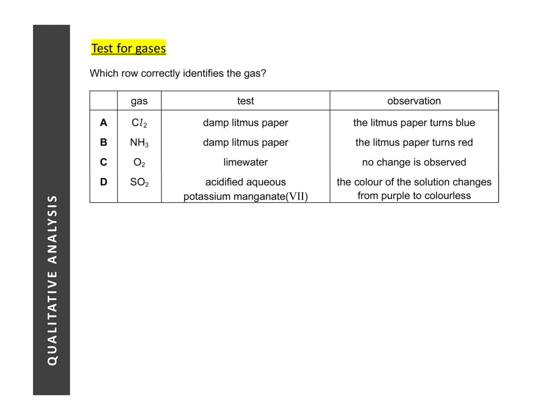For this question, we are looking at the test for the different gases and the expected observations. So let's go through each one. For A, chlorine gas would turn your blue litmus paper red and then bleach it. So it's not correct. For aqueous ammonia, you will turn your red litmus paper blue and not red. So it's not correct as well. For oxygen, the test is it doesn't involve lime water. Lime water is for carbon dioxide. Oxygen is a glowing splint and you will relight the glowing splint. So the correct answer is D.